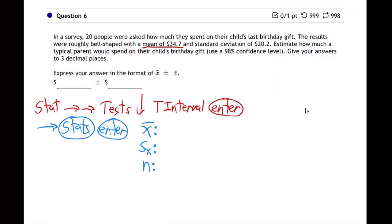So you're choosing the T interval and then you want to move over to stats, highlight stats and hit enter. We're choosing the stats option and then we're going to go down and put in the information. It'll say X bar S sub X and N. X bar, the average for me anyway, is 34.7. And the S sub X standard deviation is 20.2. The N, the number, 20 people were surveyed. And then the C level for this one is what? 98%.